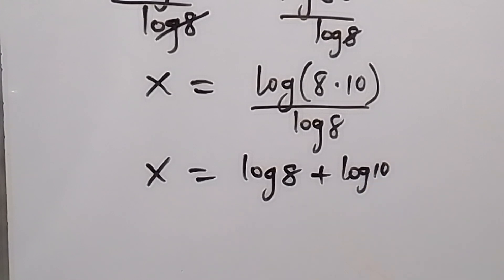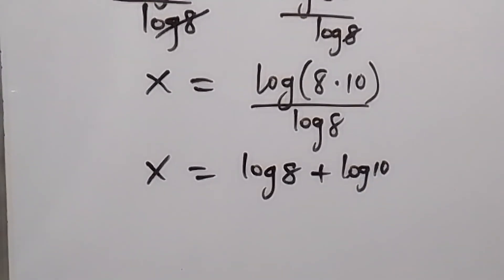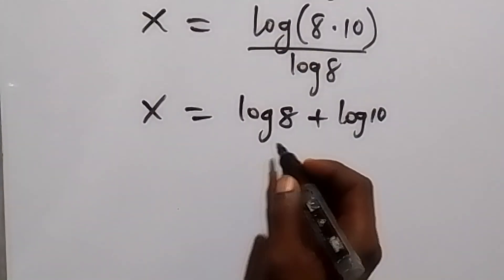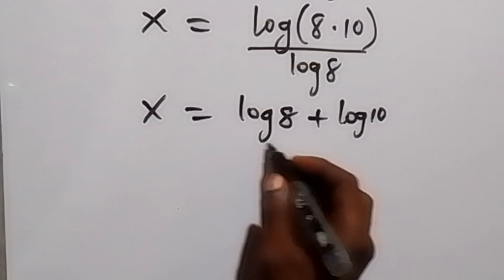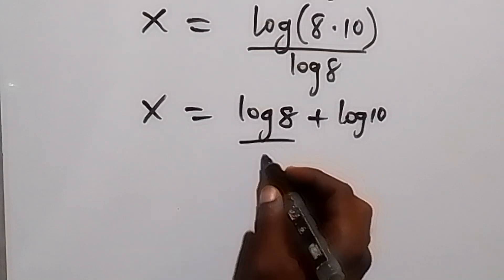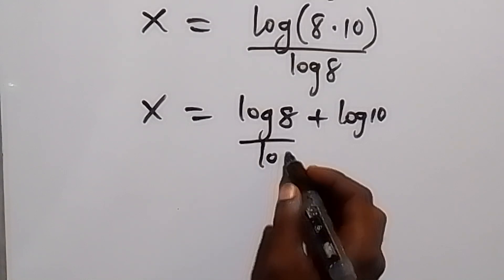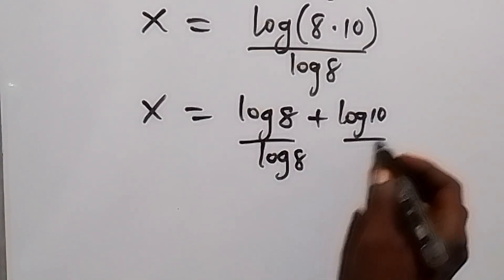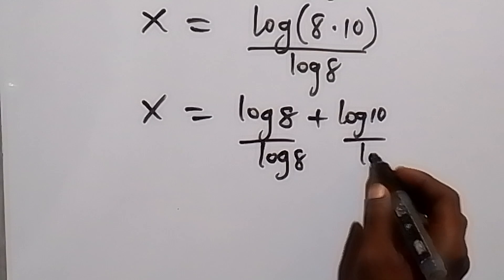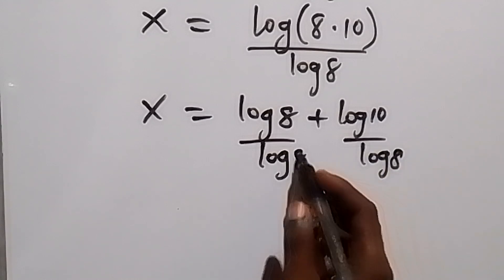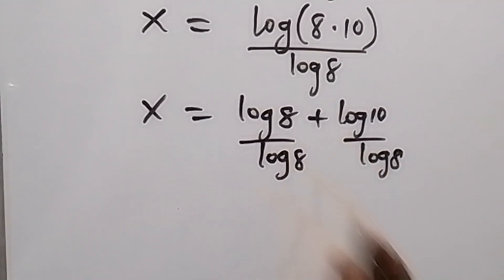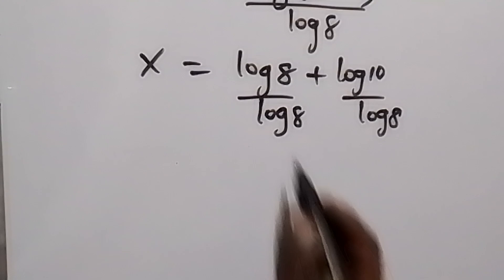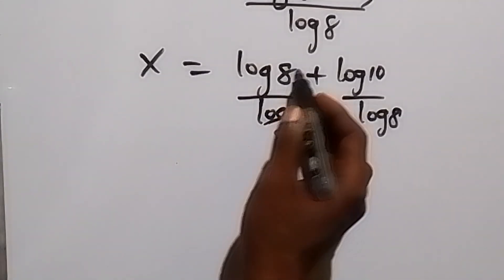We can write this separately as log 8 over log 8 plus log 10 over log 8. Log 8 cancels log 8, so we have 1 here.